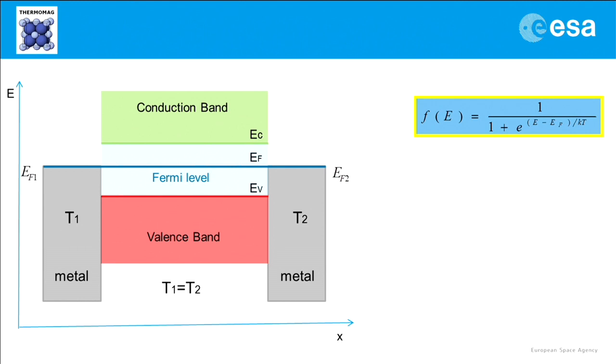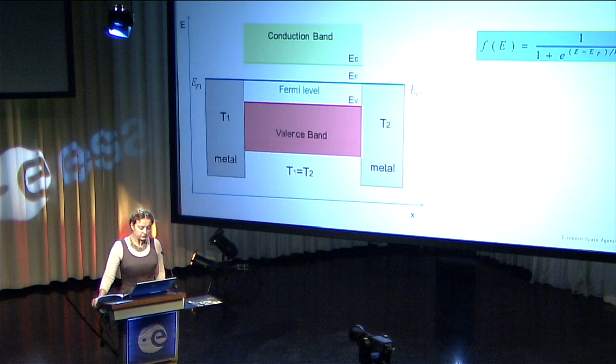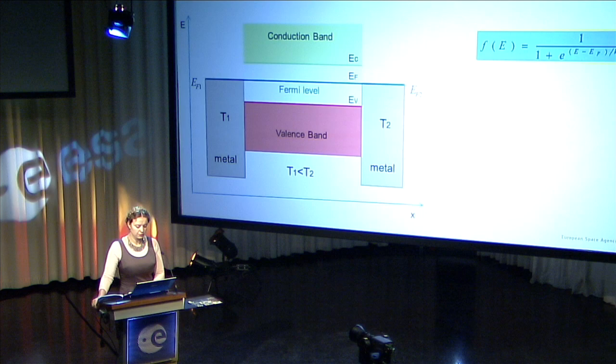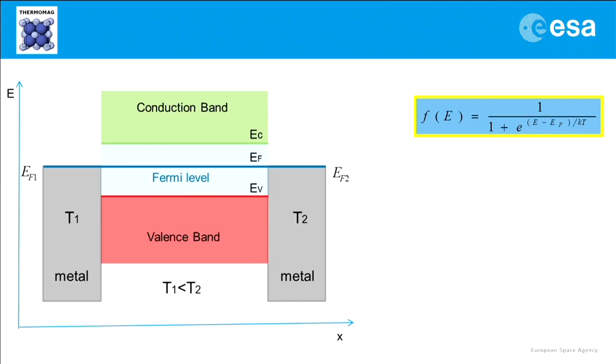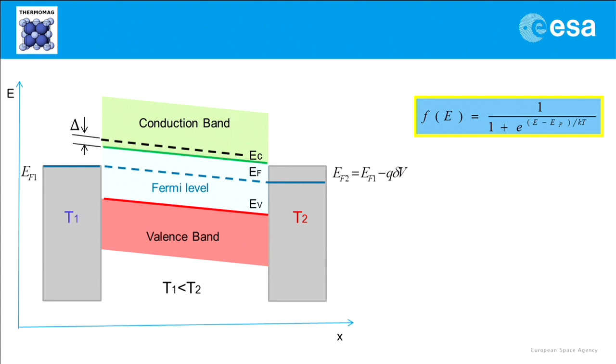Here we have an idealized energy band diagram where there is a piece of n-type semiconductor between two identical metal contacts. EC is the conduction band, EV is the valence band, EF is the Fermi level. So when we heat up one of the contacts, for example contact 2, the Fermi level moves as we described in the previous slide, and the diagram starts to look like this.